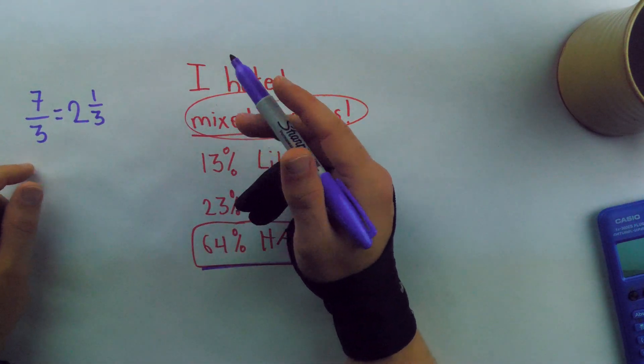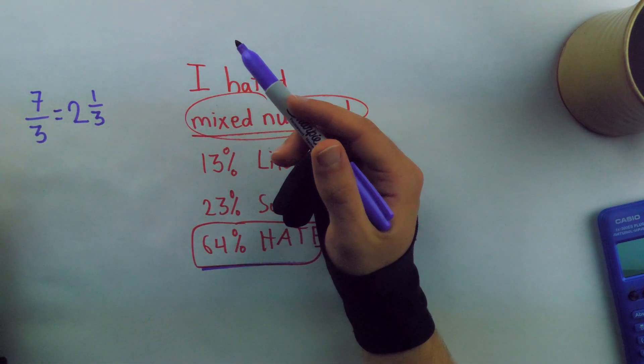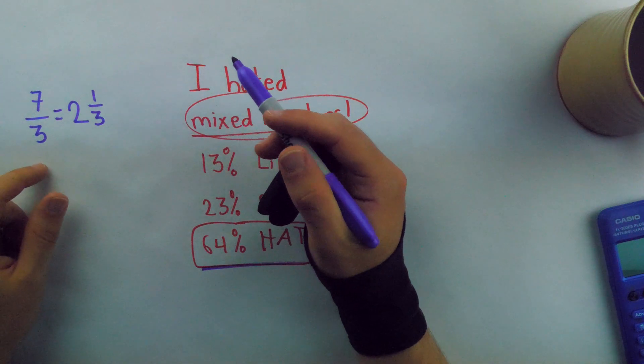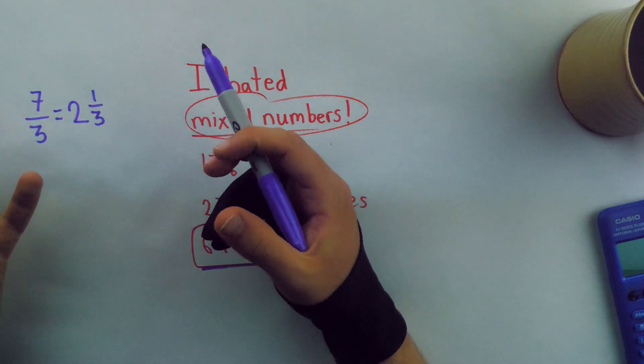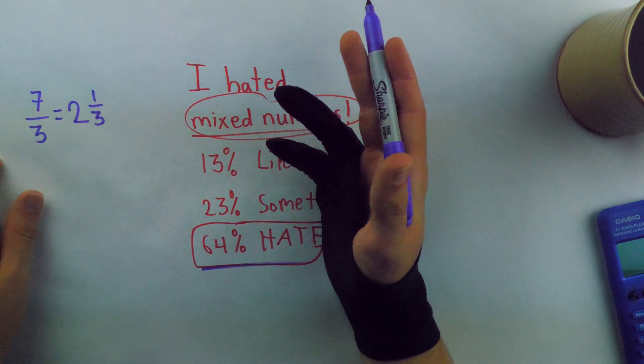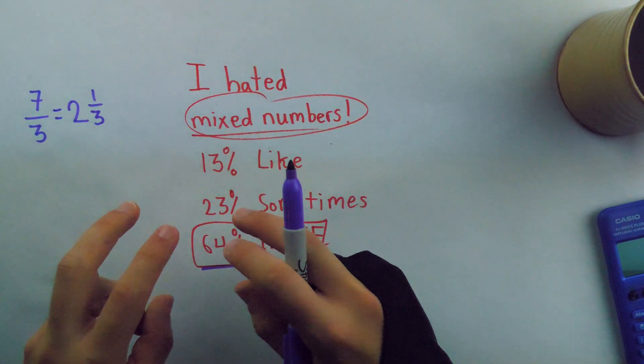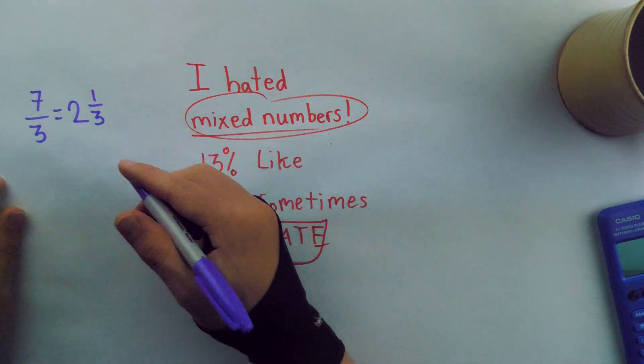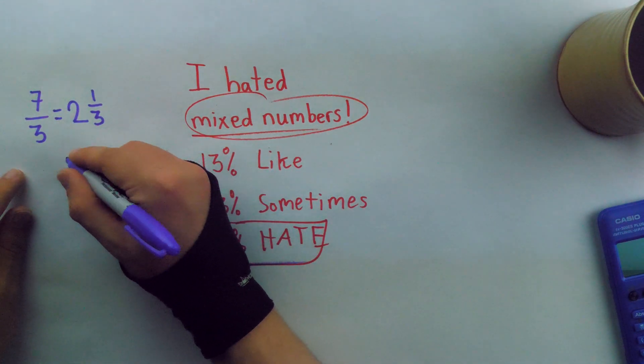So what's the big deal with mixed numbers? Why would people hate them so much? Well, I'd say the primary reason is their notational issues and ambiguity. When we first start learning about multiplication, we use the times symbol, which is typically an x.